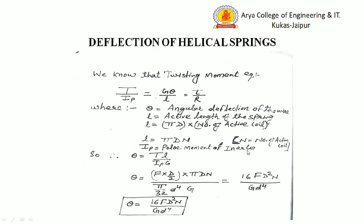Here Ip is the polar moment of inertia. From the torsion equation, θ = TL / (G × Ip). Substituting T = FD/2, l = πDN, and Ip = πd⁴/32, we get θ = 16FD²N / (Gd⁴). This is the angular deflection of the spring wire.